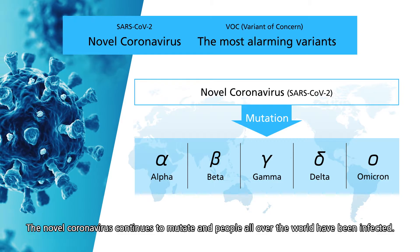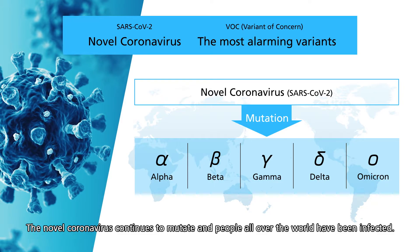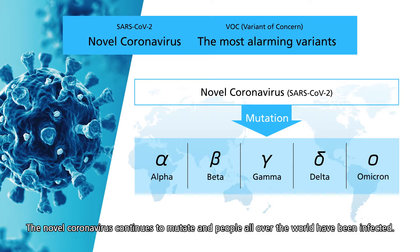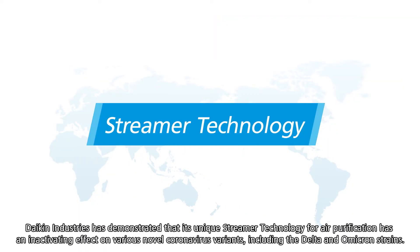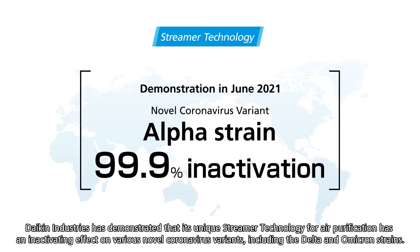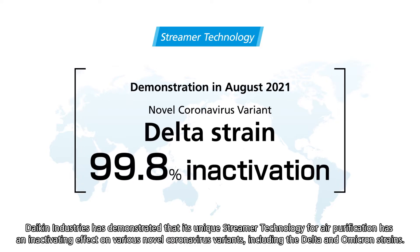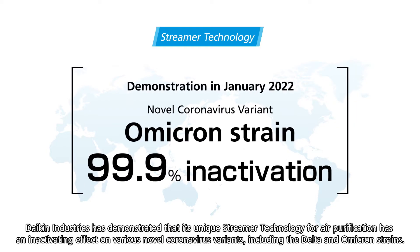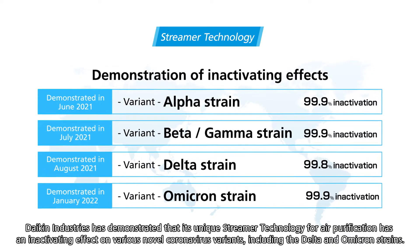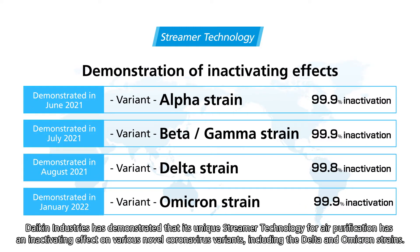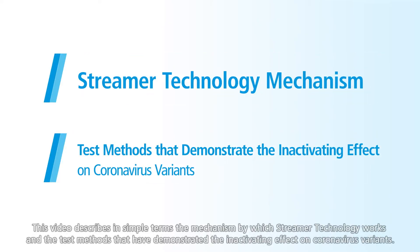The novel coronavirus continues to mutate and people all over the world have been infected. Daikin Industries has demonstrated that its unique streamer technology for air purification has an inactivating effect on various novel coronavirus variants, including the Delta and Omicron strains. This video describes in simple terms the mechanism by which streamer technology works and the test methods that have demonstrated the inactivating effect on coronavirus variants.